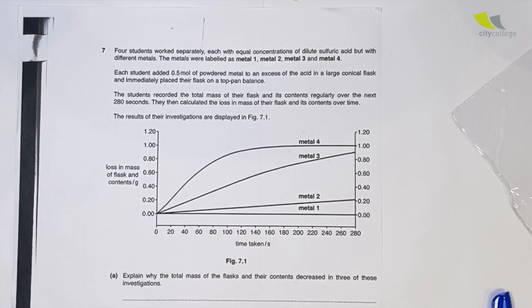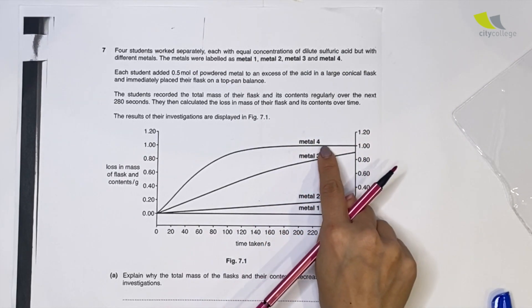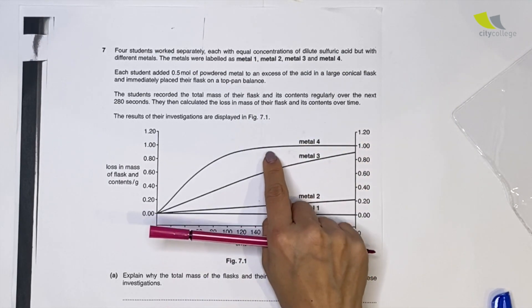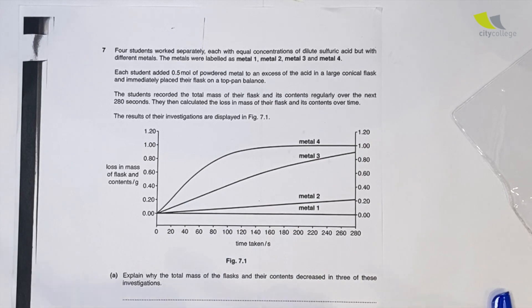Which of the metals was the first to stop reacting? Which one flatlines first? Actually, it's metal 4. If you notice, metal 4 flatlines first. Some people will say is it metal 1? No, metal 1 didn't even react.